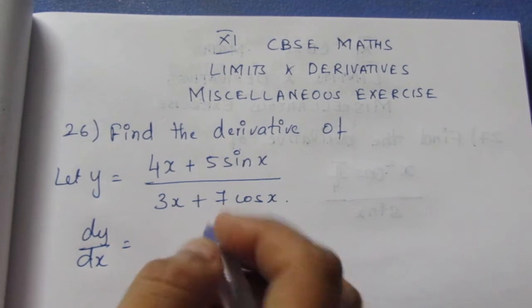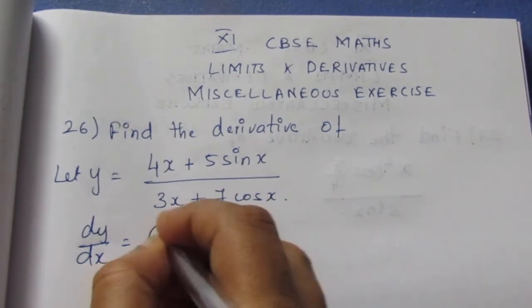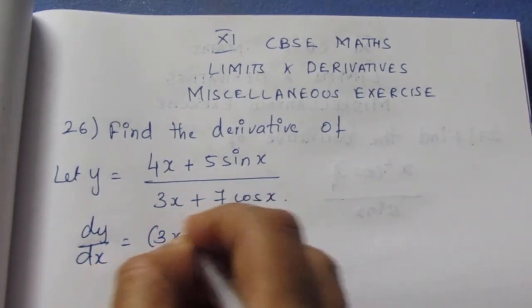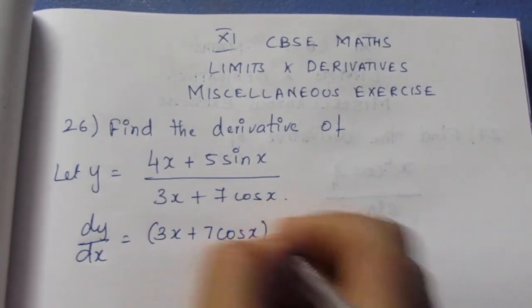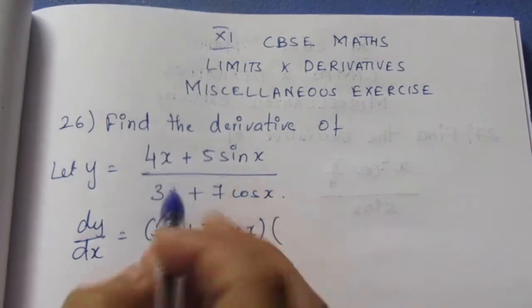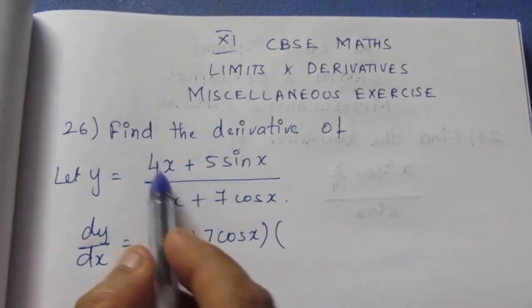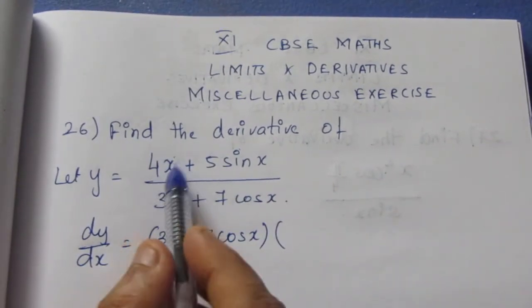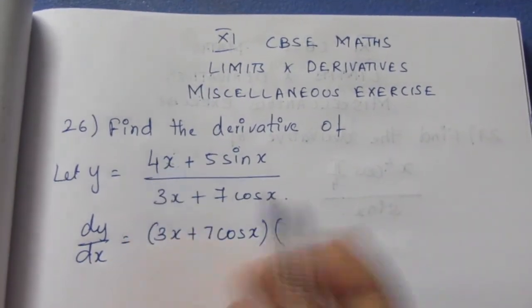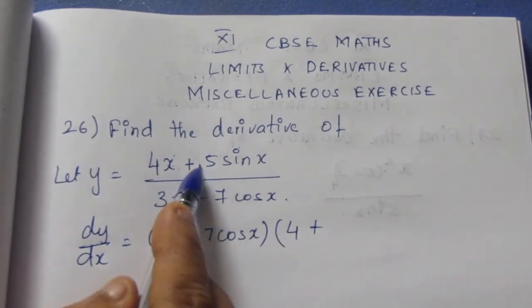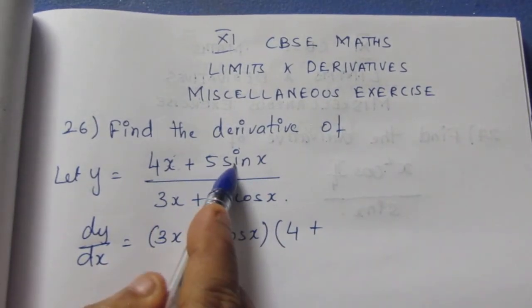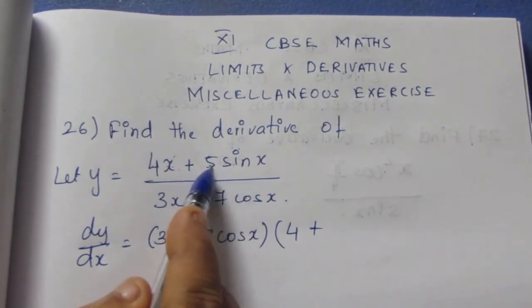First we will write the denominator, then we will differentiate the numerator. The differentiation of 4x gives 4 into 1, which is 4. Plus, the derivative of sinx equals cosx, so we get 5cosx.